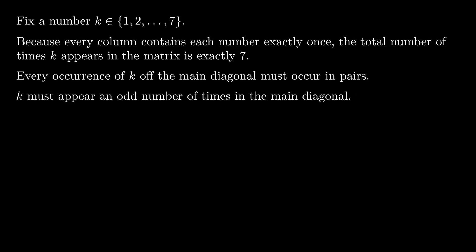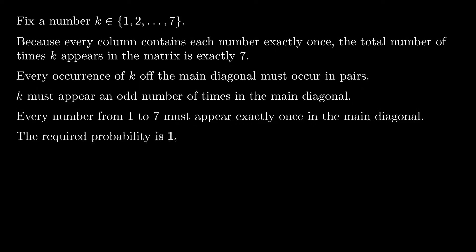Therefore, each number from 1 to 7 appears an odd number of times on the main diagonal, which means every number from 1 to 7 must appear exactly once on the main diagonal. Therefore, the required probability is 1.